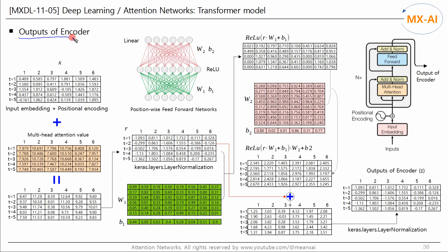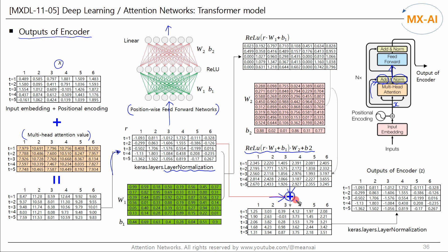Next, let's look at the process by which the encoder's output is generated. We add X to the multi-head attention we just computed — this is the residual connection we looked at in the highway network video. Then we apply layer normalization to the result. We feed the results into a position-wise feedforward network. Then we compute the sum of this output and the previous matrix, and apply layer normalization again. This is the final output of the encoder.